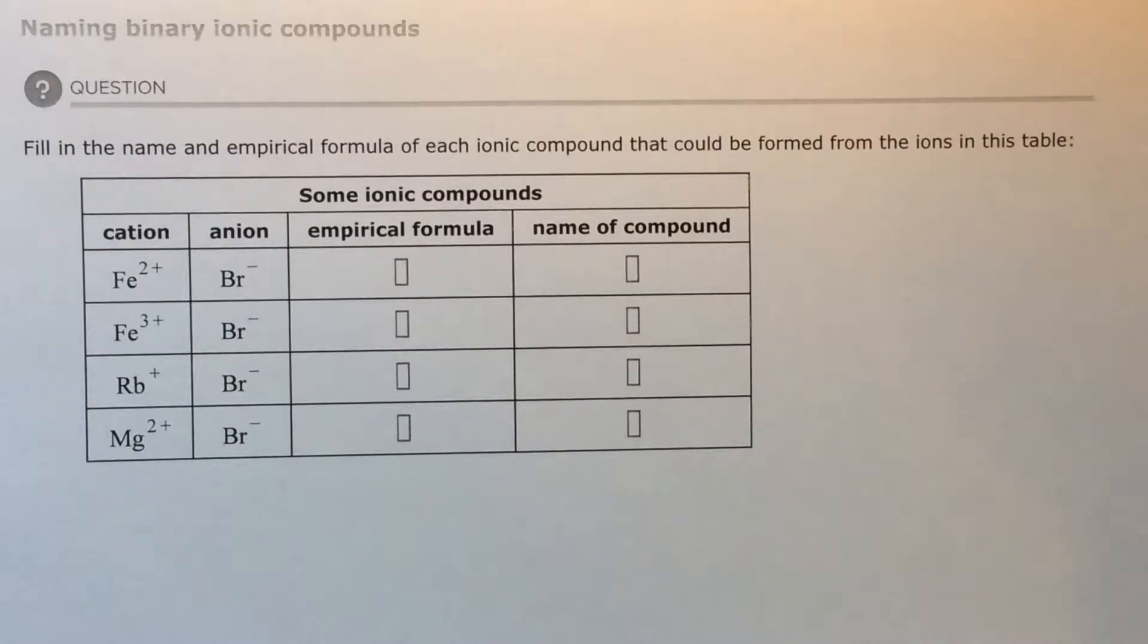If you have a representative element, also called a main group element, those are anything in the first and second columns and then the last six columns. Anything in the first and second combining with anything in the last six is going to be just regular names. You're just going to say calcium and oxygen, calcium oxide.